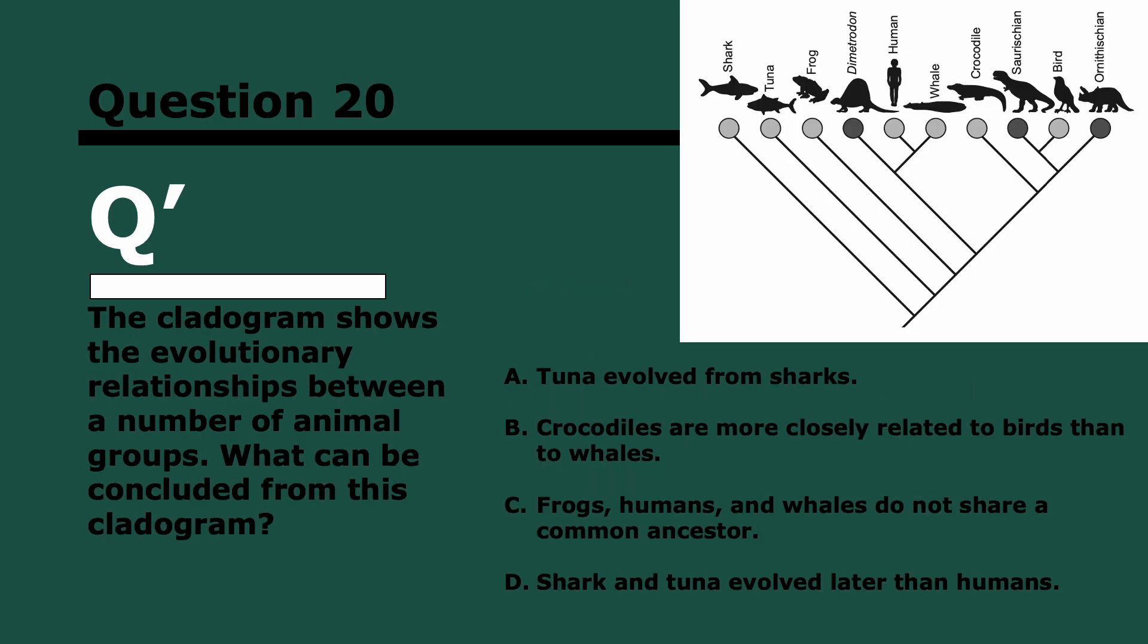Question 20. The cladogram shows the evolutionary relationships between a number of animal groups. What can be concluded from this cladogram? I think quite straightforward. Three, two, and one. It's B. Crocodiles over here are more closely related to birds, they're much closer on the cladogram than to whales, which are all the way over here in a completely different branch. If you look at the other answers, they're just not true. For C, they don't share a common ancestor. Yes they do, this one over here at the very back. Shark and tuna evolved later than humans. No, they actually evolved beforehand, they're earlier in the cladogram.